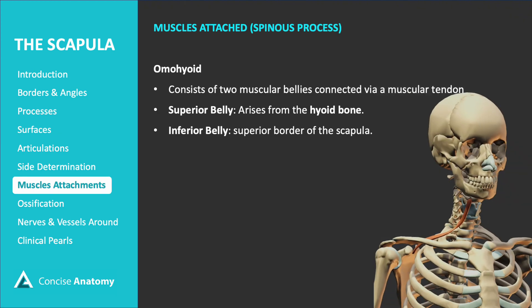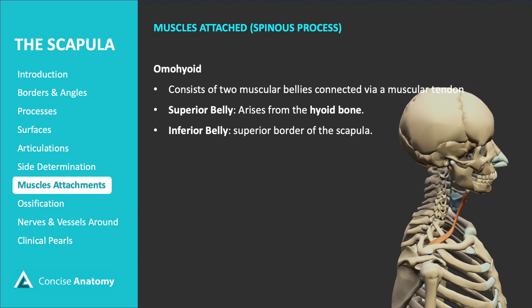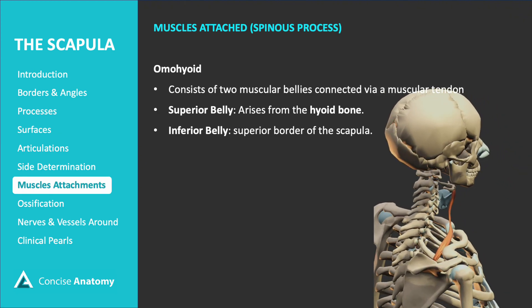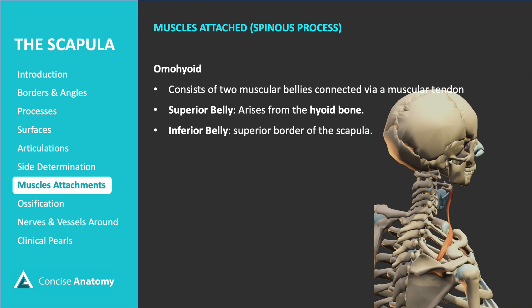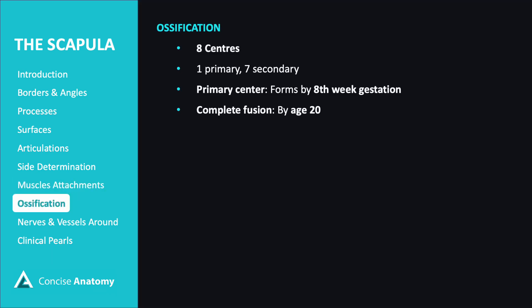The omohyoid muscle is a long, slender muscle extending from the neck to the scapula. As an infrahyoid muscle, it consists of two bellies connected by a muscular tendon. The superior belly arises from the hyoid bone, while the inferior belly originates from the superior border of the scapula.